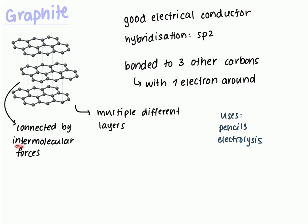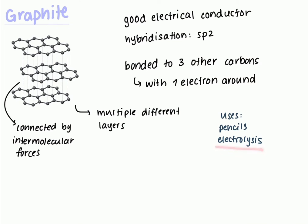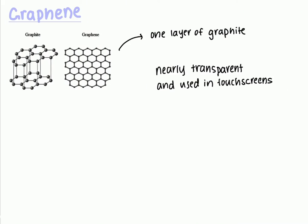Silicon dioxide has four oxygens around one silicon atom, as you can see here. It has a very rigid structure due to the covalent bonding between the silicon and the oxygens, and that causes it to have a very high melting point. It has a hybridization of sp3 because it has four domains.